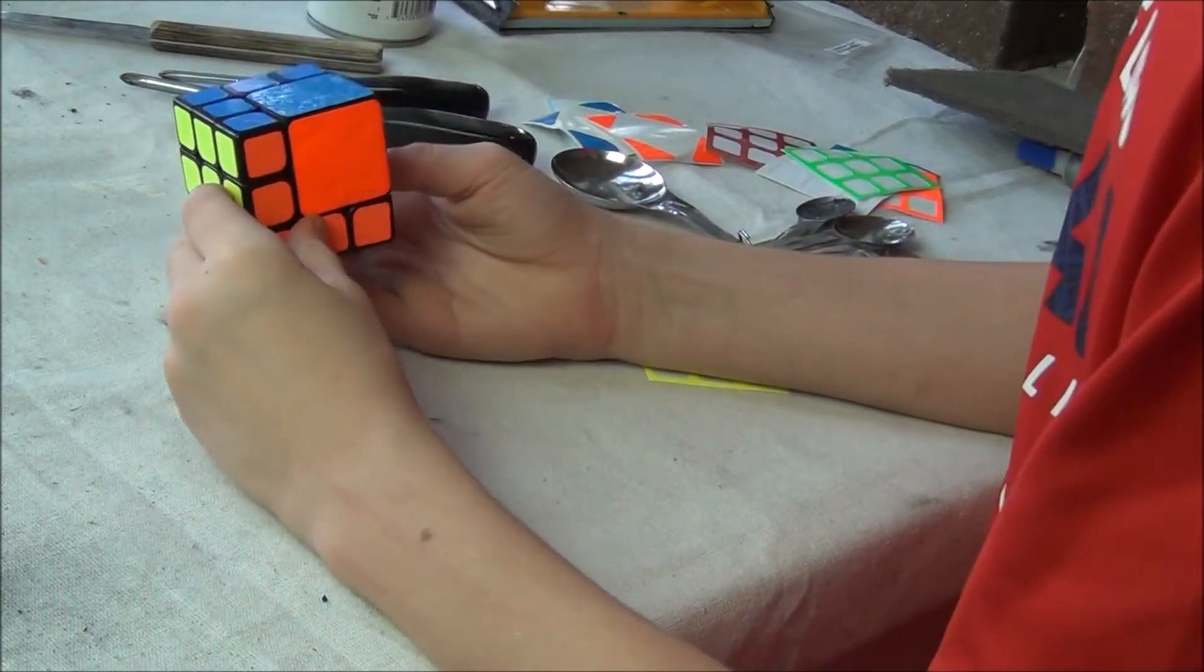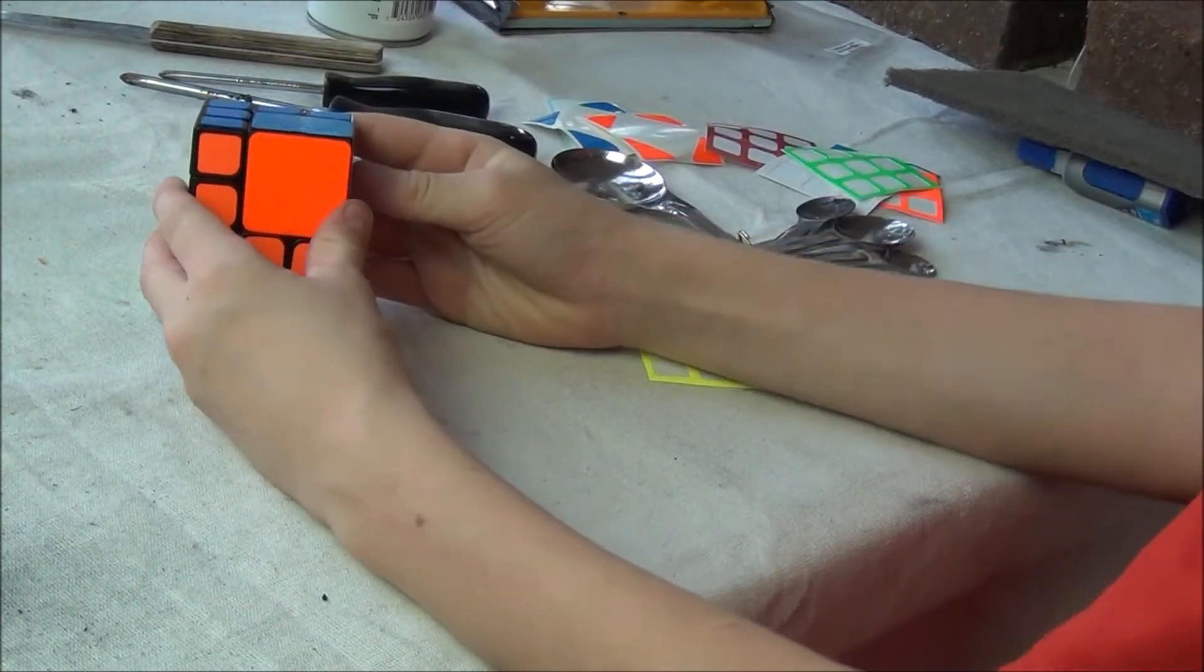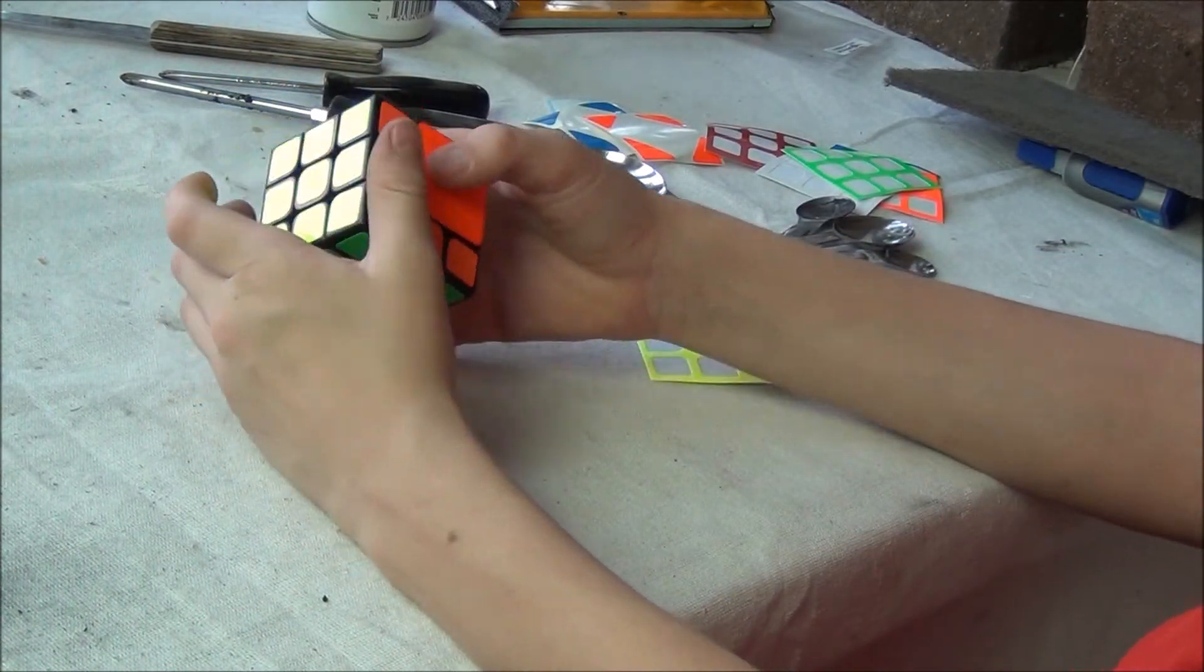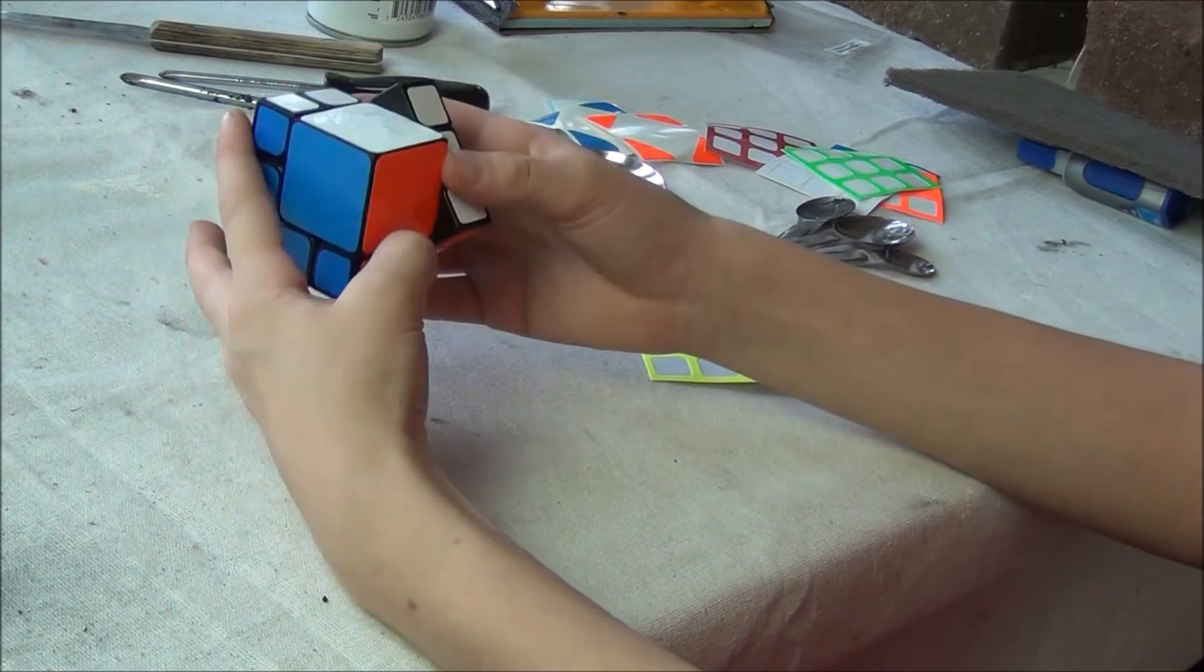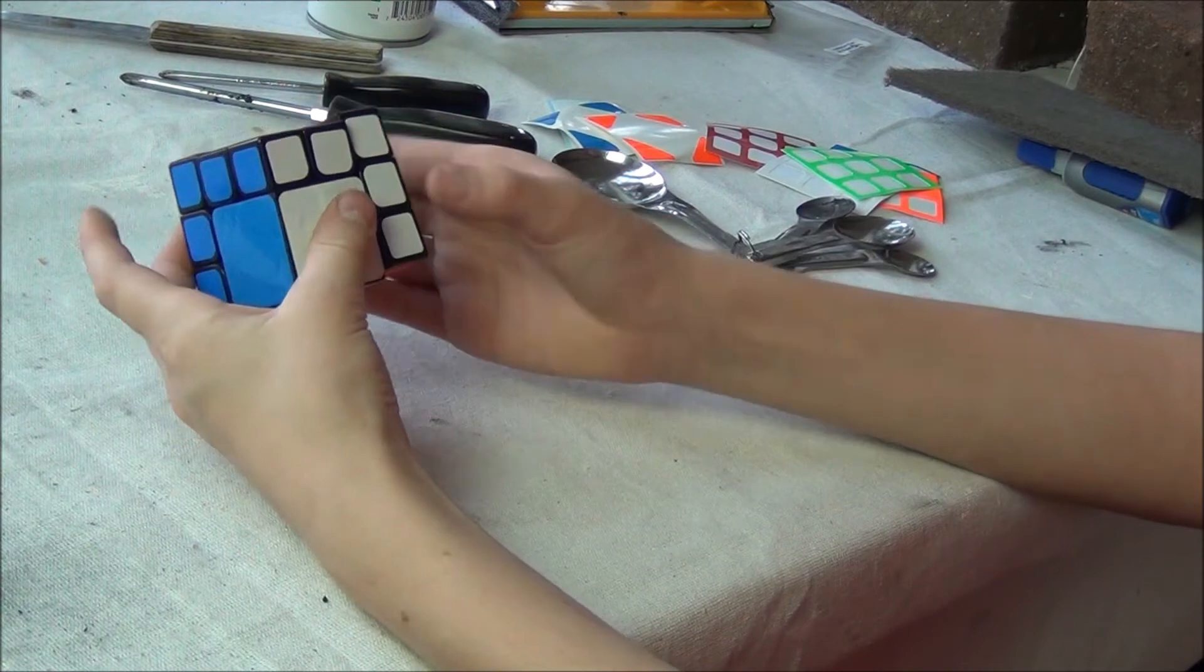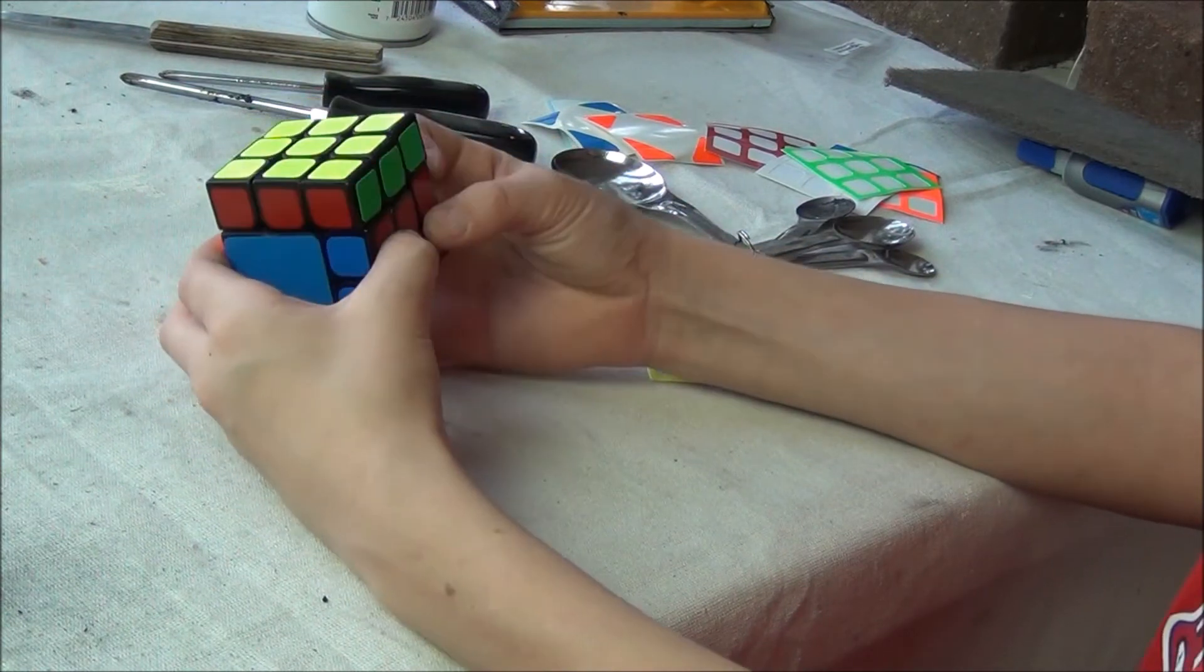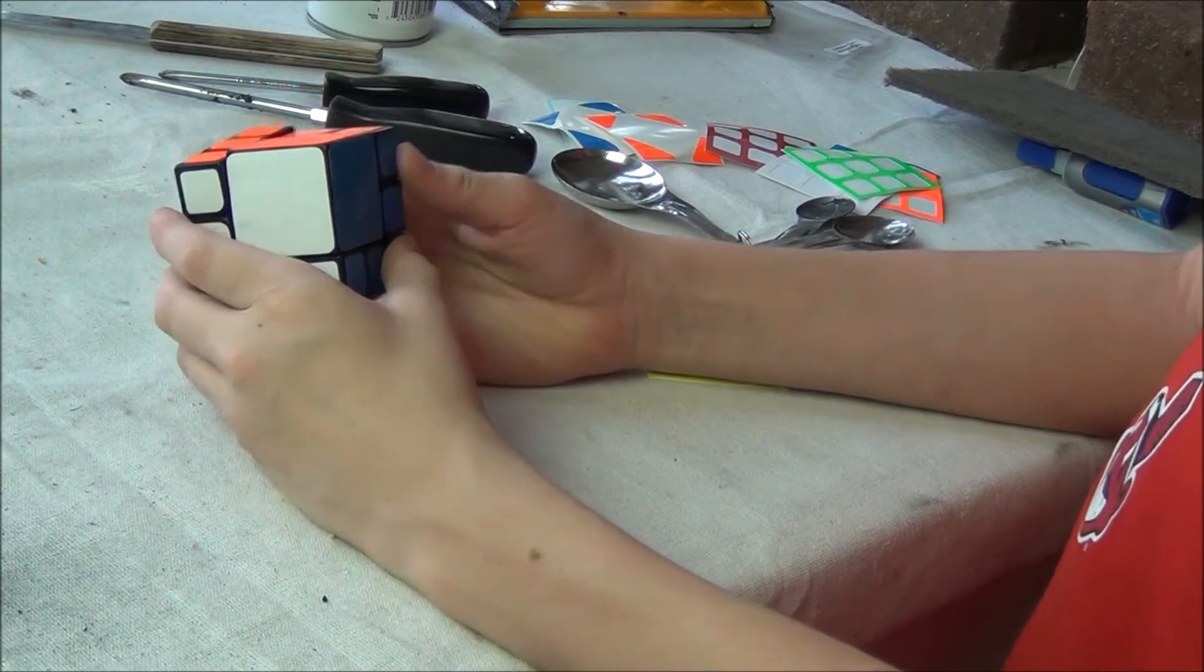And there we go, we have completed building Nathan Wilson's Fused Cube. As you can see, this thing is locked up, not moving, creating a pretty cool bandage mod. Don't want to scramble this just yet because I'm not really sure how to go about solving it.